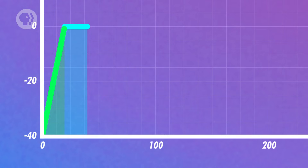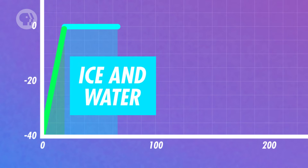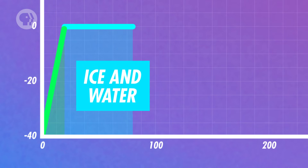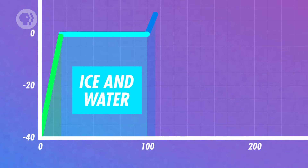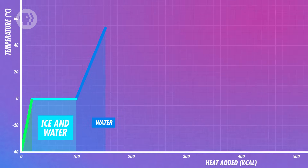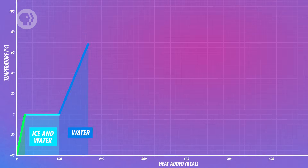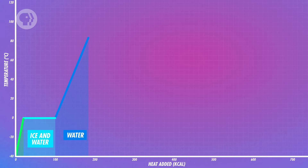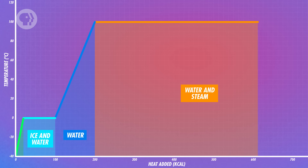Then, instead of raising the ice's temperature, the heat you add goes towards changing its phase from solid to liquid. And later, once it's all melted, the temperature of the water increases again as you add more heat, until it gets to 100 degrees. And at that point, again, the temperature stops changing, this time because the water's boiling.